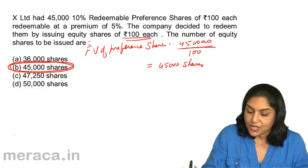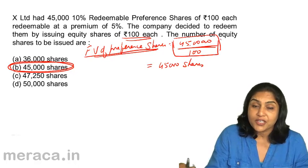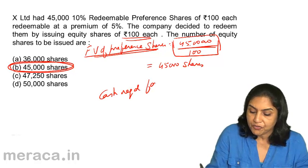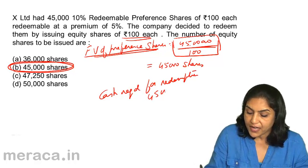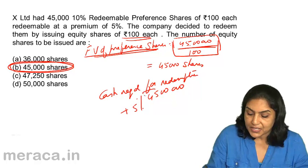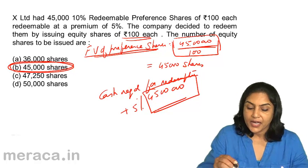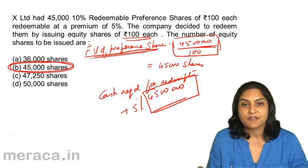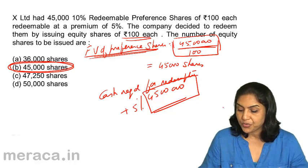Please note: when we compute the number of shares, we take 45,00,000 which is the face value of preference shares to be redeemed. The cash actually required for redemption is 45,00,000 plus a premium of 5%. However, in order to compute the number of shares to be issued, we always consider only the face value of preference shares to be redeemed.